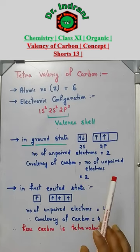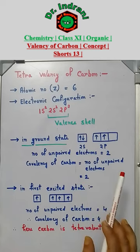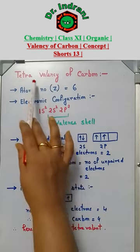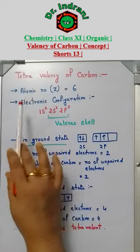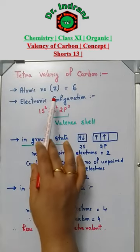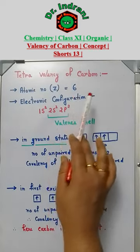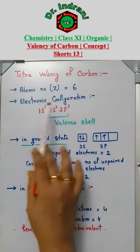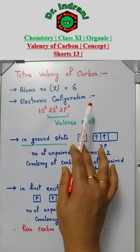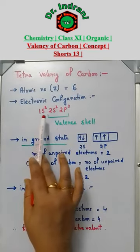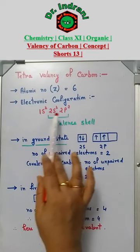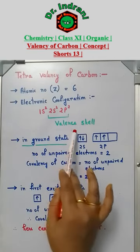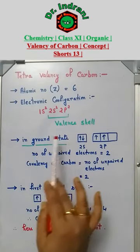Hello students, welcome back to Sir Prasayan. Today's topic: tetravalency of carbon. Atomic number of carbon is 6. Its electronic configuration is 1s², 2s², 2p². 2s², 2p² is the valence shell.